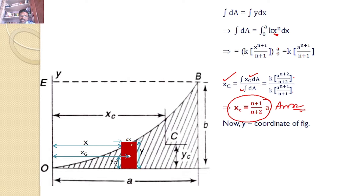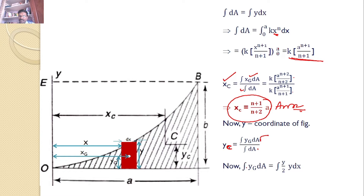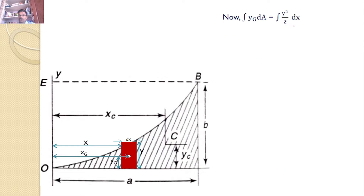Similarly, the Y coordinate of the centroid is YC = ∫YG·DA / ∫DA, where ∫DA = K·A^(N+1)/(N+1) as already calculated. For the numerator ∫YG·DA, we note that YG = Y/2 (centroid of the strip midheight) and DA = Y·DX, so the integrand becomes Y²/2·DX. Substituting Y = K·X^N gives Y² = K²·X^(2N).